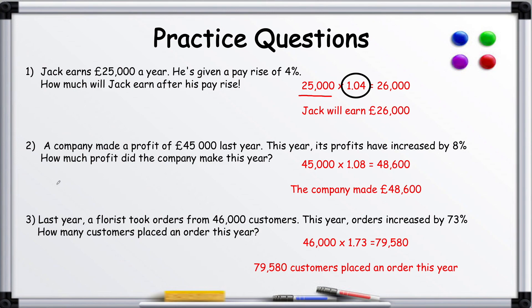A company made a profit of £45,000 last year. This year its profits have increased by 8%. How much profit did the company make this year? So again, here you see 1 point and whatever the percentage increase is—1.8 is 8%. So you multiply 45,000 by 1.8 and you get £48,600. The company made £48,600.